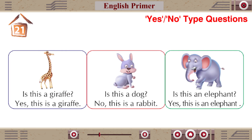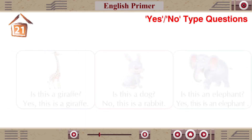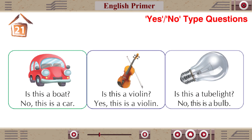Is this a dog? No, this is a rabbit. Is this an elephant? Yes, this is an elephant. Is this a car? No, this is a car. Is this a violin? Yes, this is a violin. Is this a tubelight? No, this is a bulb. Exercise: See the pictures and write the answer with yes or no. Teacher's Corner: Ask the students some questions that can be answered in just yes or no.